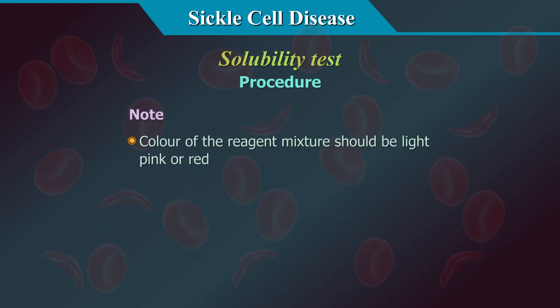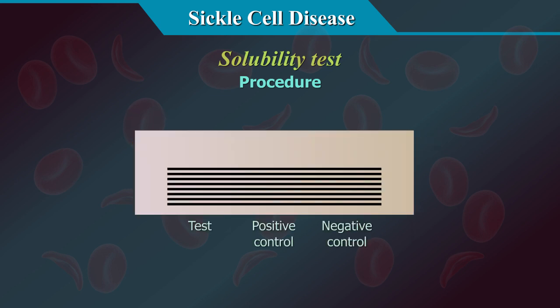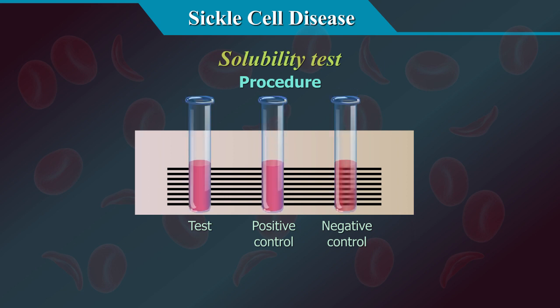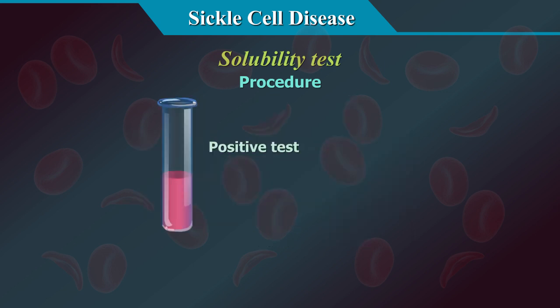Note: the colour of the reagent mixture should be light pink or red; a light orange indicates that the reagent has deteriorated. Hold the tube 2.5 cm in front of a white card with black lines and read for turbidity in comparison to positive and negative controls. The lines are not visible through the positive control tube due to turbidity, whereas the lines are visible through the negative control tube. If the test appears positive, centrifuge at 1200 g for 5 minutes; a positive test will show a dark red band at the top, while the solution below will be pink or colourless.